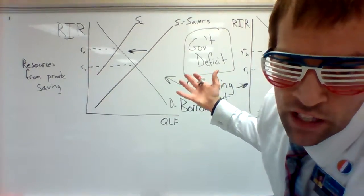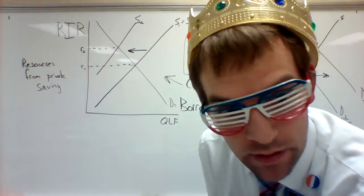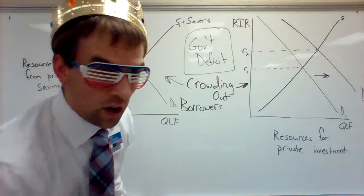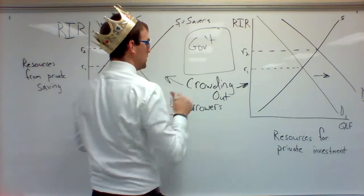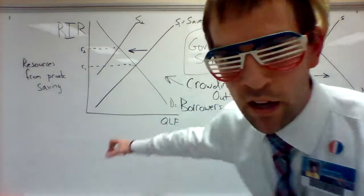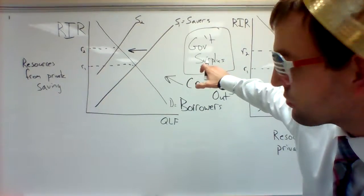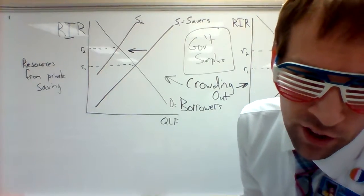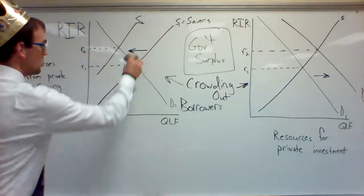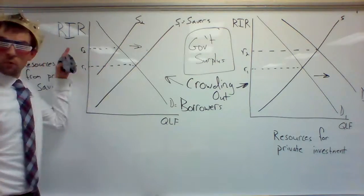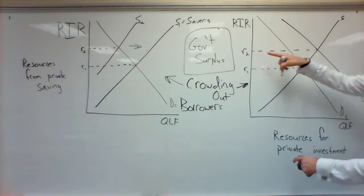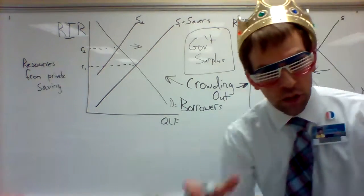Now, imagine if instead of running a deficit, the opposite happens — the government doesn't spend all the money it has and actually has some extra. That's what we call a surplus. I'm just going to switch the arrows, and you're going to see that the real interest rate would go down now. So I would move from R2 to R1 in both cases, going down.